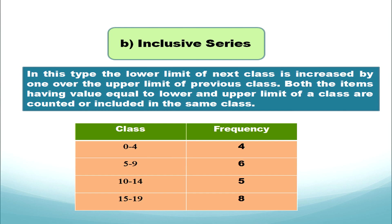In an inclusive series, both the lower limit and the upper limit are included in the class to make a tally chart. The class interval gap also remains the same. For example: 0 to 4, then 4 plus 1 equals 5, so next class is 5 to 9, then 9 plus 1 equals 10, giving 10 to 14, and so on. The gap of 5 remains the same throughout.